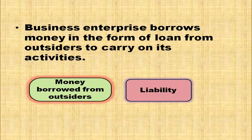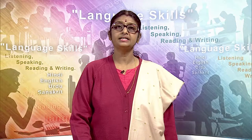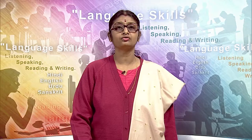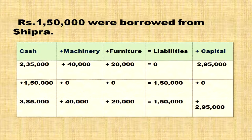A business enterprise borrows money in the form of a loan from outsiders to carry on its activity. Money borrowed from outsiders is a liability for the business. Rupees 1,50,000 were borrowed from Shipra. Cash is coming inside the business for rupees 1,50,000, so in the cash column add plus 1,50,000. It is borrowed from one party, so liabilities are increasing — Shipra being a creditor is increasing. In the liabilities column, add 1,50,000.